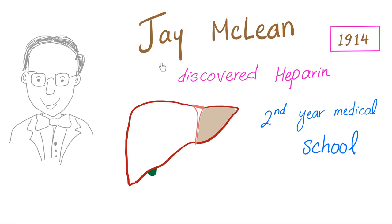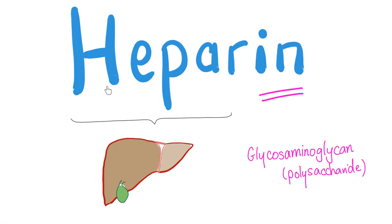Before we get started, let me tell you about Jay McLean, the dude who discovered heparin in 1914. And he was only a second year medical student. He was able to extract heparin from the liver of a dog. And that's why it's called heparin — hepa means liver. The -in suffix most of the time means protein, but not here. Here it's a glycosaminoglycan, which is a polysaccharide, a carbohydrate.